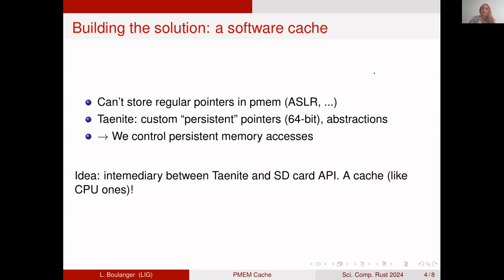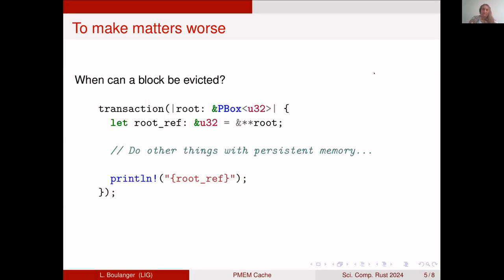This is important because our solution for the embedded system is to have an intermediary between Taenite on one side and the SD card on the other. Our idea is to have a cache, kind of like a CPU cache. If you know how CPU cache works - if the cache becomes full when you try to fetch things, you have to evict something. Usually in most heuristics, you evict the oldest, most stale block. But in our case, when we try to implement this, we encounter a small problem.